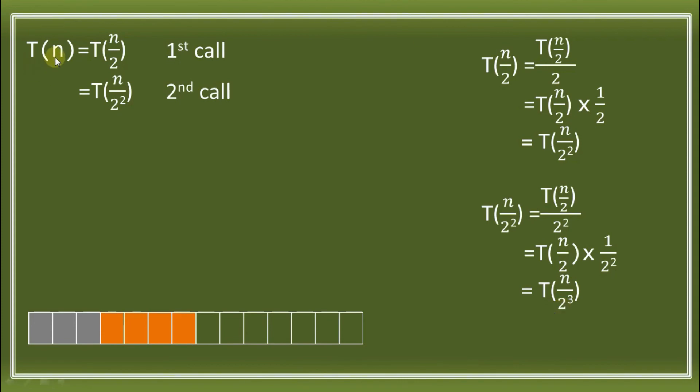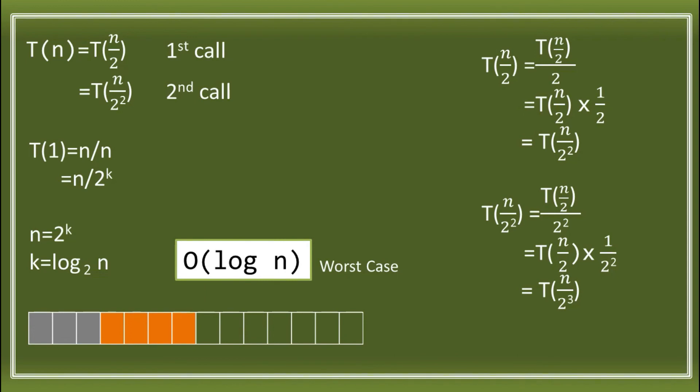When does T(n) become 1? Or when does only 1 element remain in the array? T(n) becomes 1 if n is divided by n. When it's divided by itself. How does the divisor in T(n) become n? We can see this is 2, becoming 2², then 2³ when we have a third call. We have a constant number. The first call, we can say 2 raised to 1. The second call is 2 raised to 2. Third call is 2 raised to 3. So we have n over 2^k, where k is a constant number. So 2^k equals n. How do we get k? The value of k will be log n base 2. We can say that the time complexity of a binary search is big O of log n. That is the worst case.